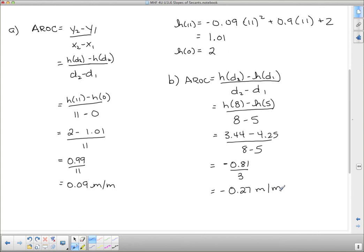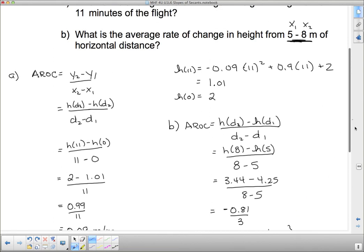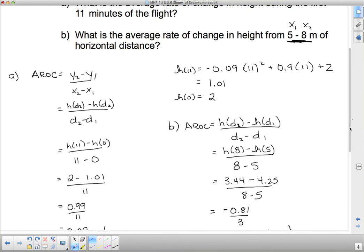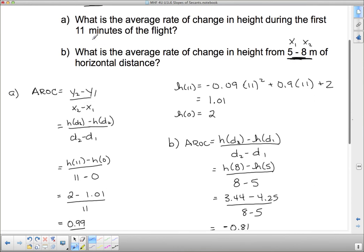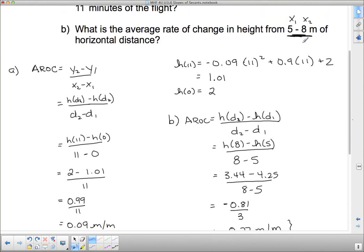So it's actually decreasing on average from 5 to 8. It's on a decrease. And from overall, from 0 to 11, it's increasing. So something happened between 5 and 8 that made the function come back down again. But again, we're only worried about average rate of change. So we only worry about the beginning point and the end point when we're doing these. Okay, that actually wraps up this lesson.